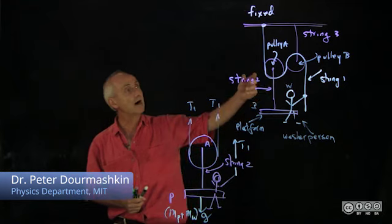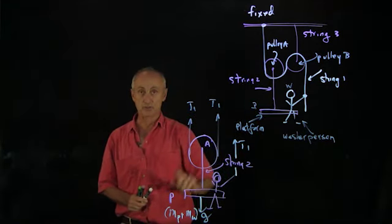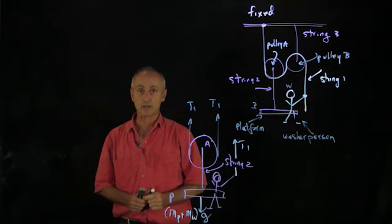So now that we've combined pulley A, string 2, platform and washer as our system, we can now address our question.